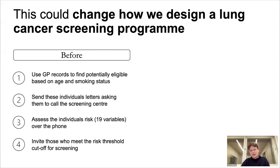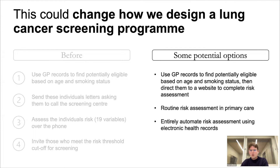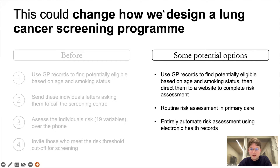We also have to run call centers for this, which becomes too complex at population scale with multiple diseases. But when you can move from 19+ variables to what we've produced with AutoPrognosis, you could simply do this based on GP records and direct someone to a website to fill in other bits of information — completely bypassing the call center. A GP or any allied healthcare professional could do this, not just a doctor. Routine risk assessment in primary care could be realistic, or in the future the risk assessment could be fully automated behind the scenes so the right people are flagged.